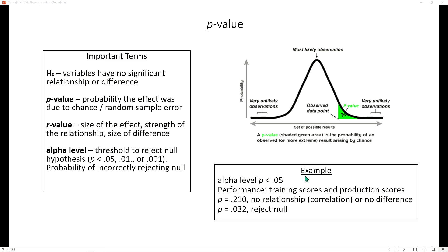Here's an example. If the alpha level is set at 0.05, we may have training scores and some production scores, and in one test we see that the p-value is 0.210. That is not less than 0.05. Therefore, there's no relationship. In other words, our training program is not working. There's no relationship between our training program and the production scores.